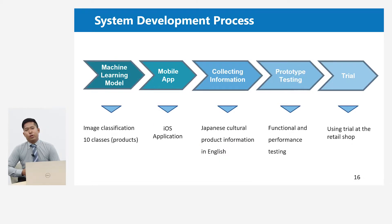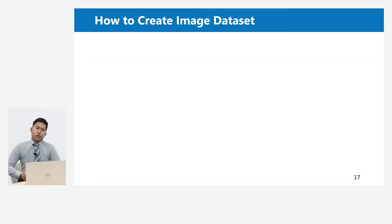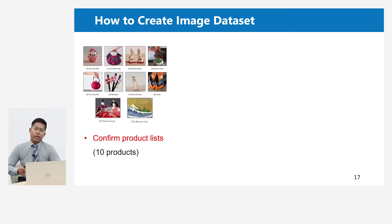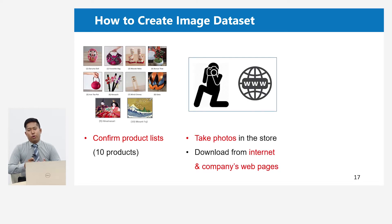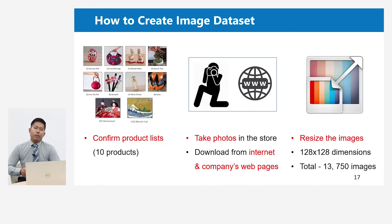This is the system development process. First, I develop the machine learning model and the iOS application. Then I collect customer product information and do product testing. Finally, I try and use it at the retail store. At the first stage of machine learning, we have to create the image dataset. I confirmed the product list with the company to include in my prototype application. Then I visited the retail store to collect product images. Some images are downloaded from their company webpage and the internet. My dataset includes over 30,000 images of the products.